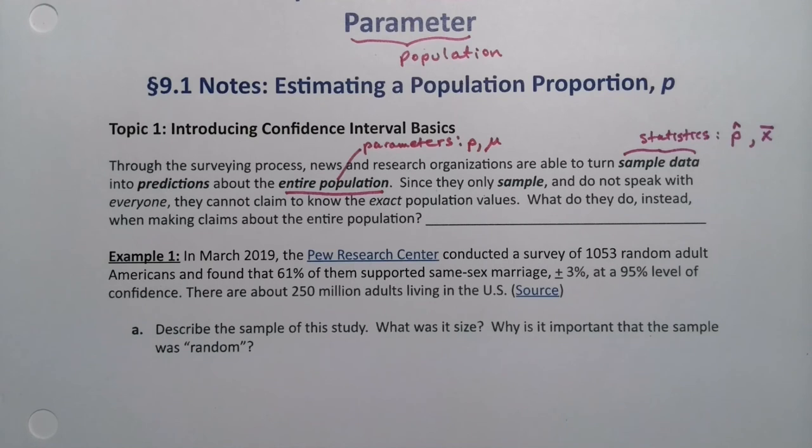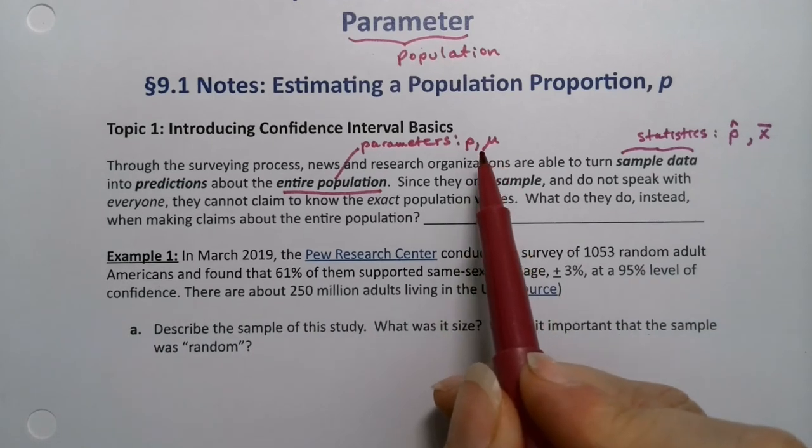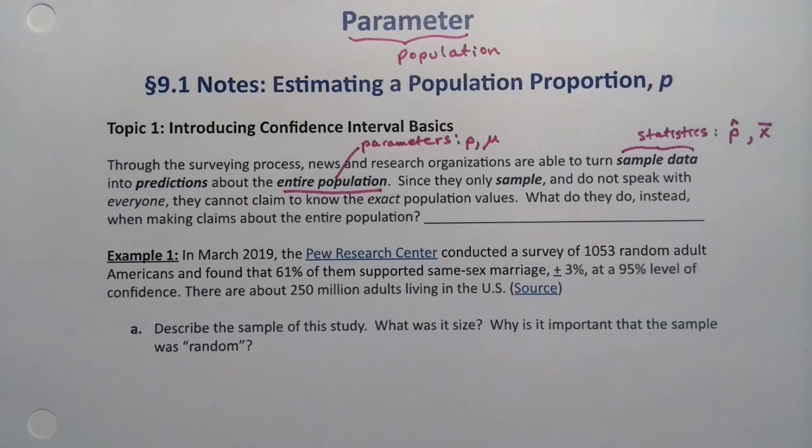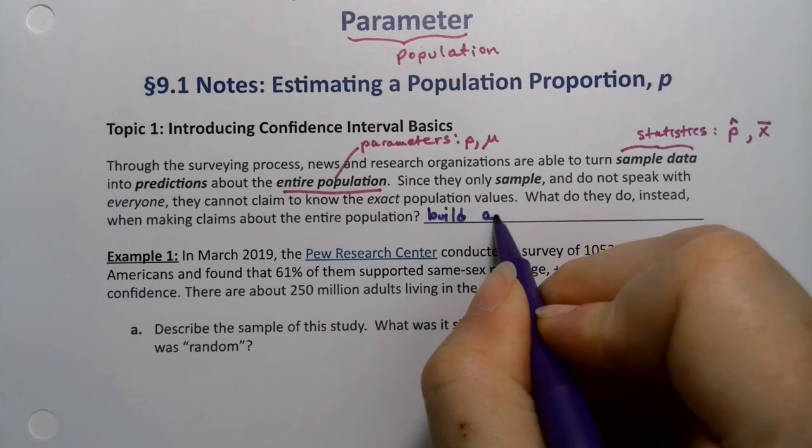But the issue is we're only taking a sample. That sample does not speak for everyone, so they can't actually know what the exact population values are. These parameters are unknown. So what do they do instead when they make those claims about the entire population? They will build a confidence interval.